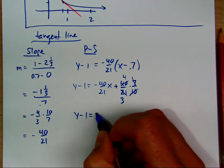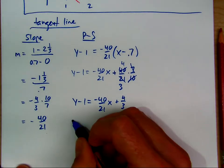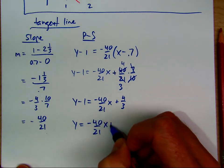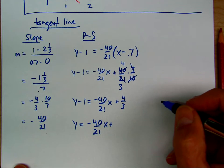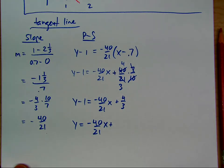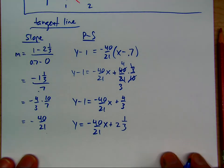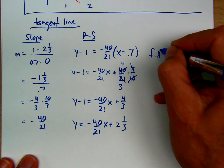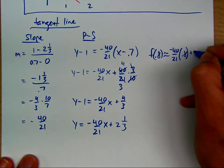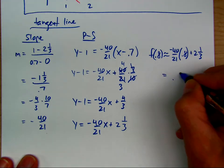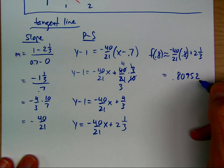So y minus 1 equals negative 40 over 21 times x plus 4 thirds. Adding 1, we get 2 and 1 third. So the tangent line equation gives y equals negative 40 over 21 times x plus 2 and 1 third. Our approximation: f of 0.8 is approximately negative 40 over 21 times 0.8 plus 2 and 1 third, which equals approximately 0.80952.